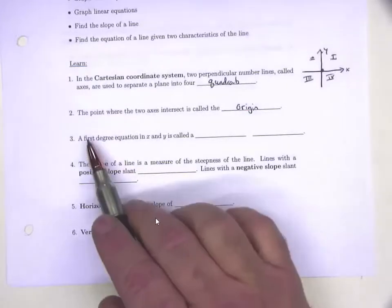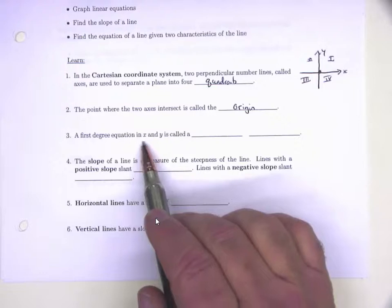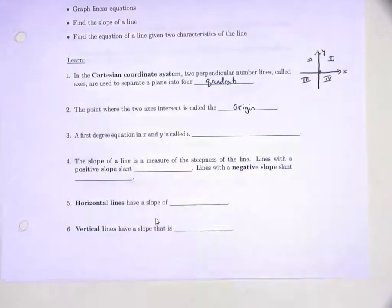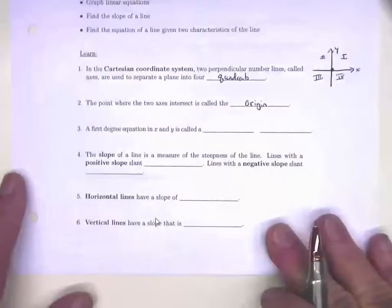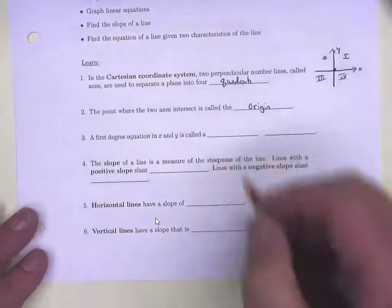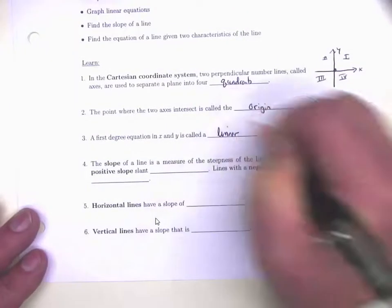A first-degree equation in x and y — meaning x to the first power plus y to the first power — is called a linear equation. We're in Section 1.5 — lines — so that's appropriate.